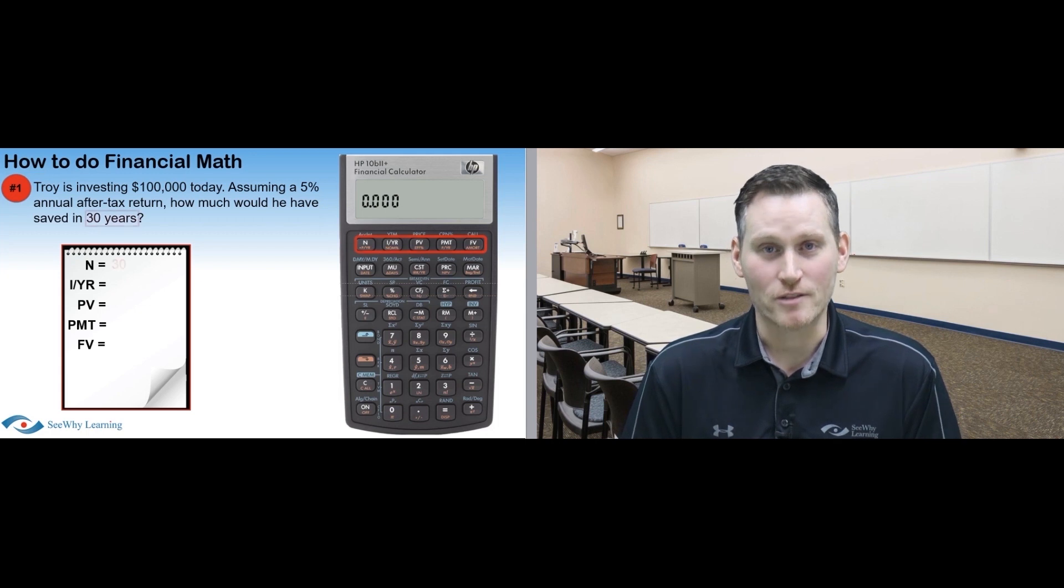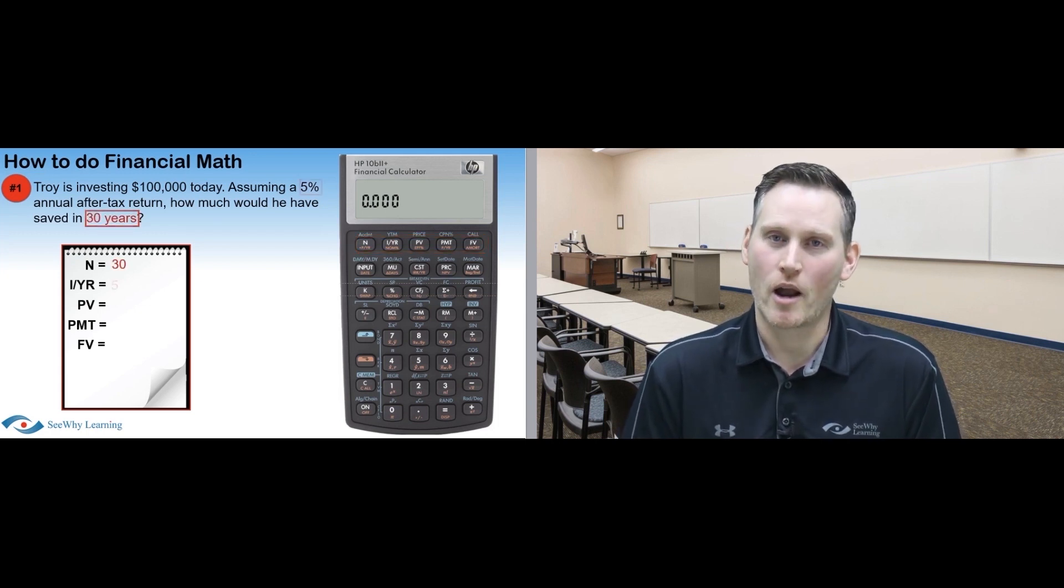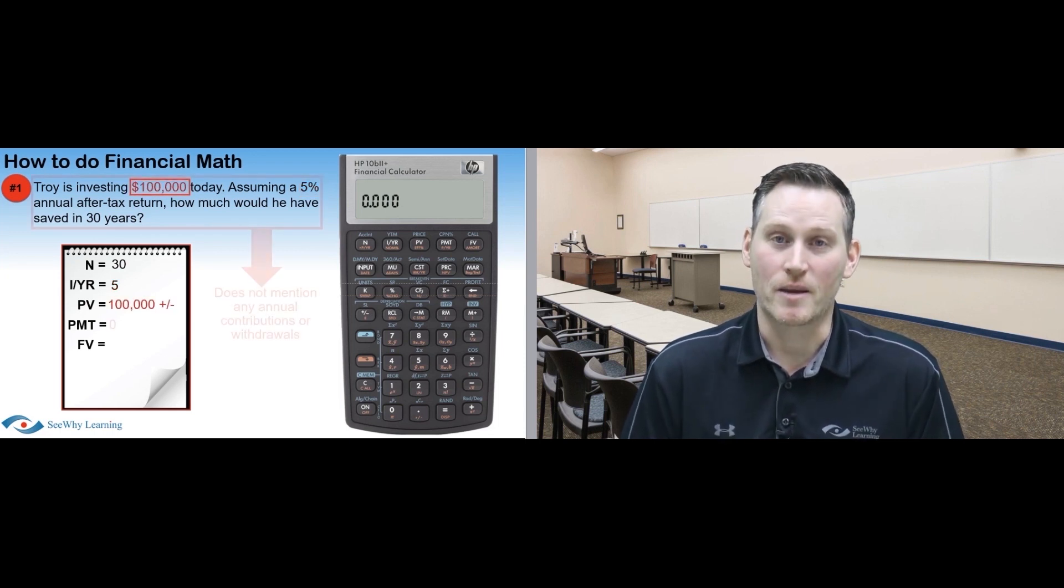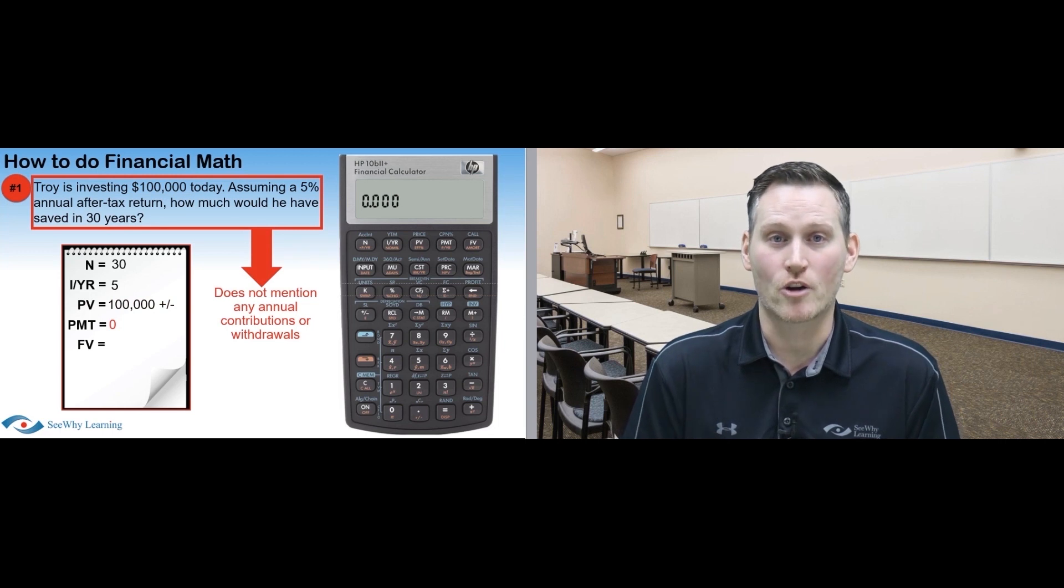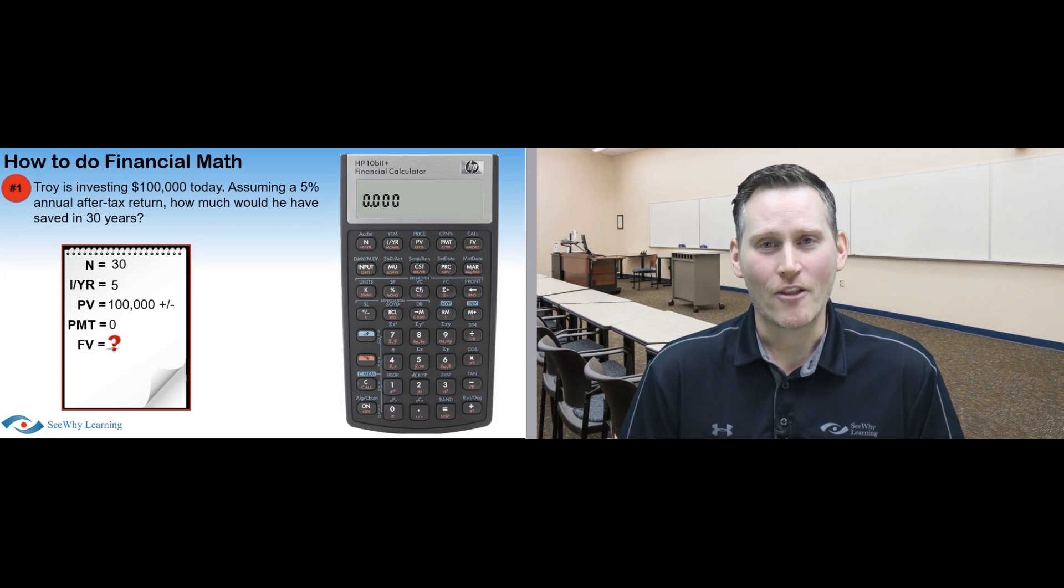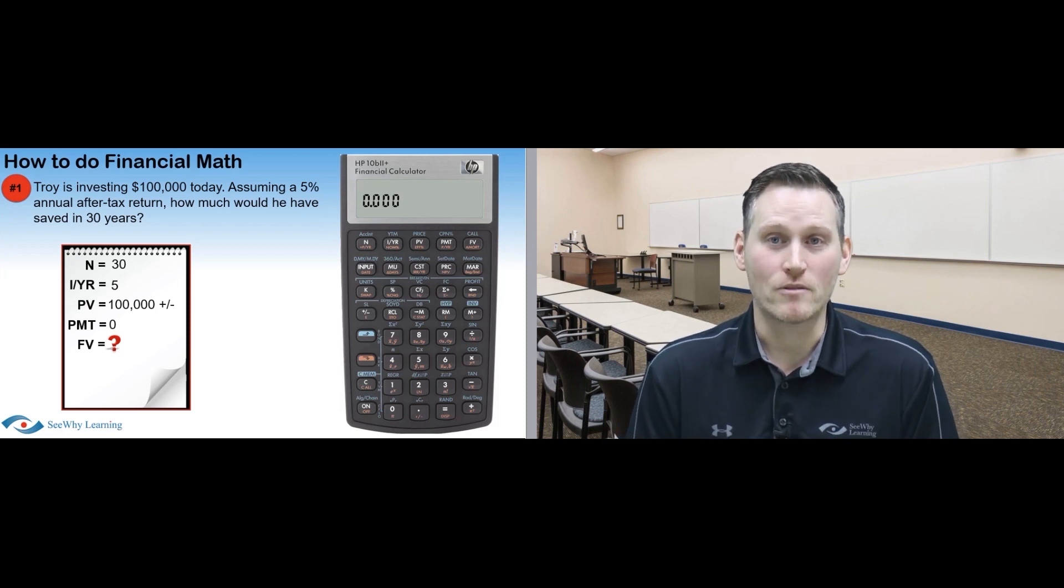So in this question, N is 30, for 30 years. IYR is 5, that's the interest rate. PV is $100,000, that's the amount being invested. PMT is 0, since there are no annual contributions or withdrawals. And FV is the variable that we're trying to solve.